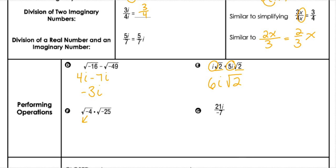Let's simplify this multiplication. Square root of negative 4 is 2i, and square root of negative 25 is 5i. When we combine those, I get 10i squared. And remember, i squared is negative 1, so that would be negative 10 as my final answer.